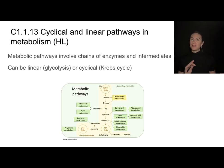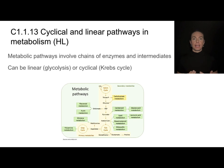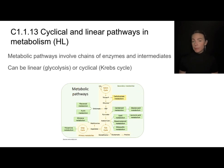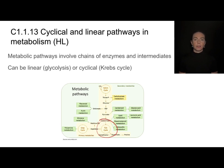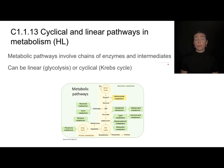Theme C is all about interaction and interdependence, and there's no better example than metabolic pathways. When we think about all the enzyme-catalyzed reactions in a cell, there are several types of interactions. You can have a linear pathway — like glycolysis — or pathways can be cyclical, like the Krebs cycle or the Calvin cycle. What they have in common is they all include chains of enzymes and intermediate products.